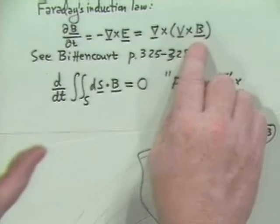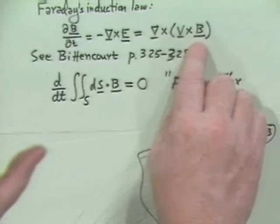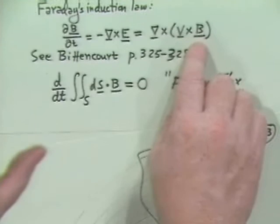That's what the frozen flux theorem says. Now, that only applies perpendicular to the magnetic field, not parallel. Next time, we'll come back and talk about this some more, but what we'll in addition talk about is the fact that if I add a little bit of resistivity, then the plasma can get loose from the magnetic field or diffuse relative to it. But we'll talk about that next time.